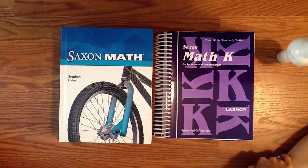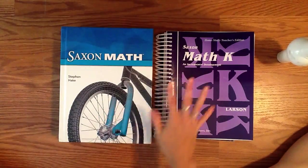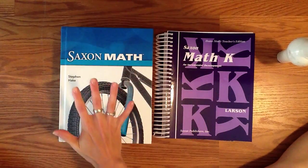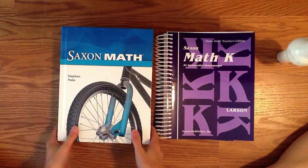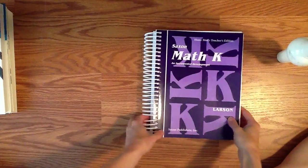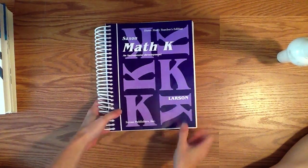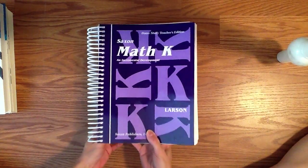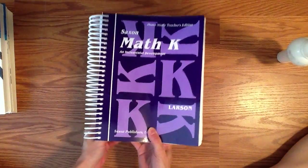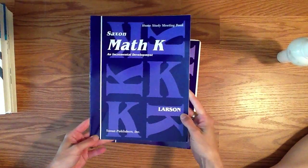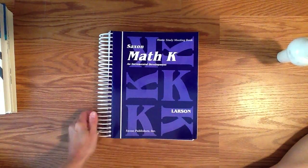This is a sneak peek of Saxon math. We're going to look at kindergarten Saxon math and an intermediate third grade Saxon math. We're going to start with kindergarten. When you receive your materials for kindergarten, you only receive a teacher's edition. All your instruction and activities are going to be within this workbook. You'll also receive a home study meeting book which I will show you here in a minute.